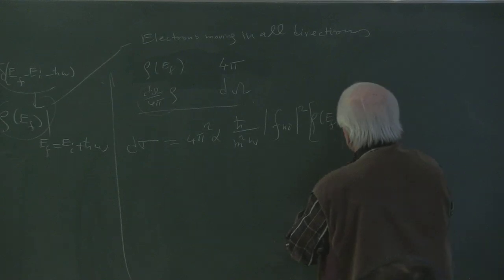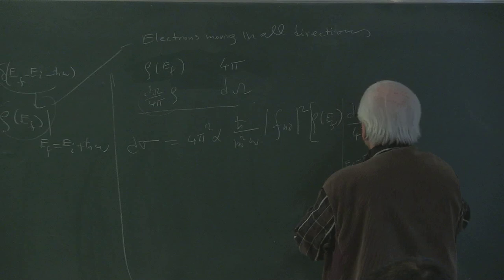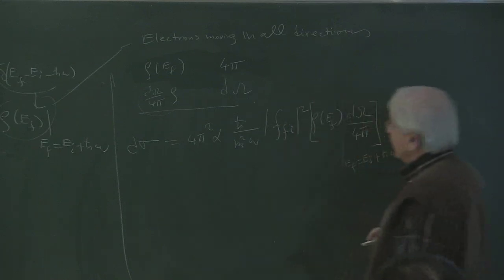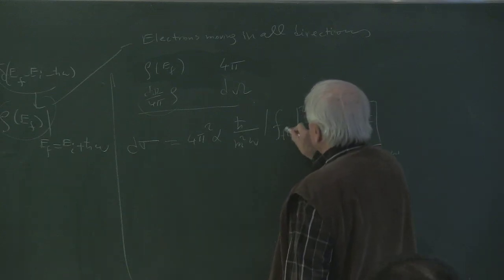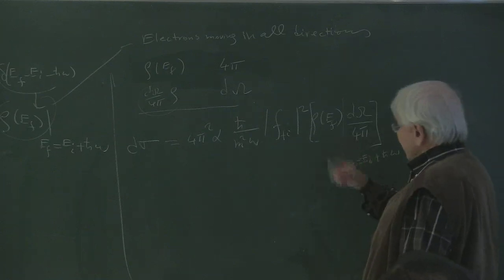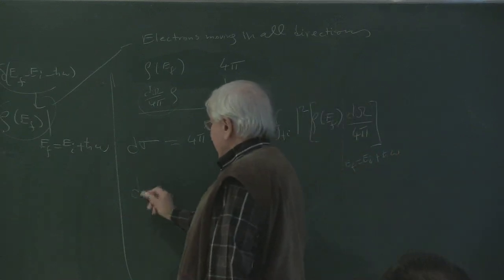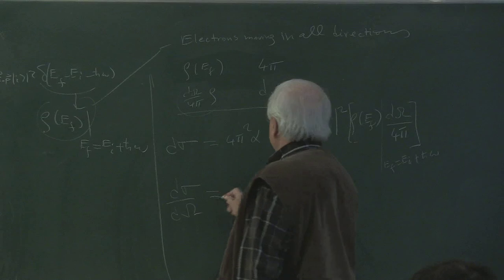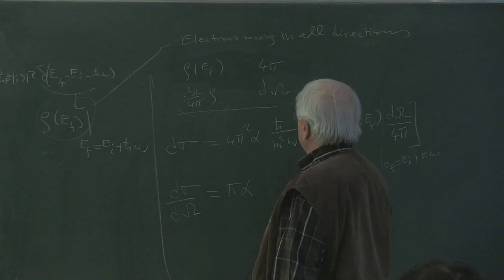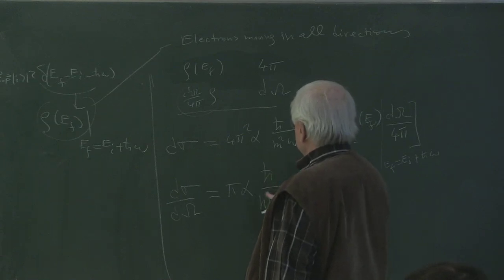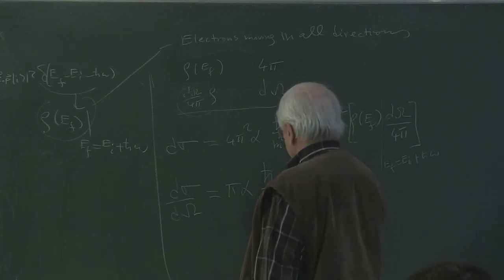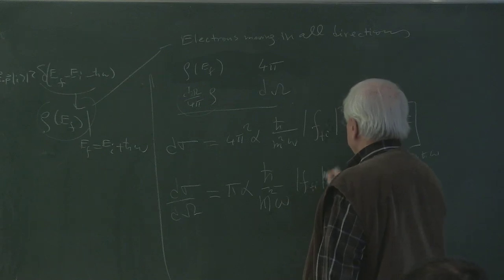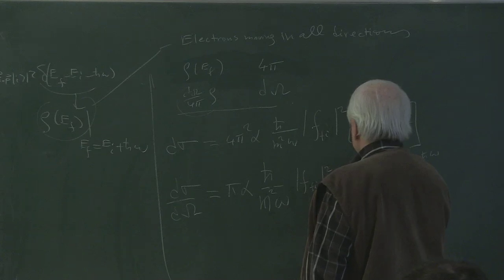This is to be taken at E_F = E_I + ℏω. Obviously, energy conservation is always to be imposed. The capital F is the amplitude; the little f and i are the initial and final states. At the end of the day, we move dΩ to the left — because that's the customary expression they look at in experiments — writing dσ/dΩ. Dividing by 4π, we get π·α·ℏ/m² × ω × |F_{fi}|² × ρ(E_F) with energy conservation.